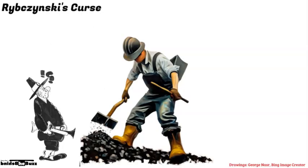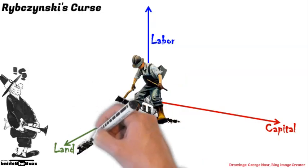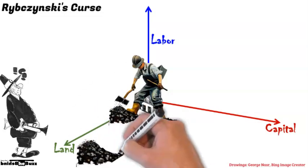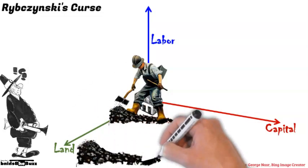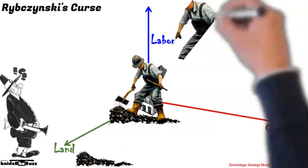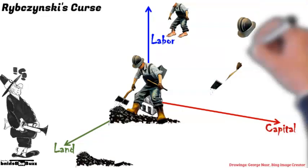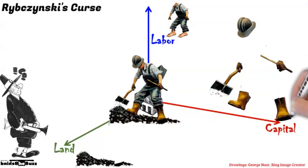An economy is built on three interconnected factors: land, labor, and capital. Land contains water, energy, and resources. Labor is manpower and skills — it includes the families and communities that support it. Capital is equipment, tools, infrastructure, and any currency that can pay for them.